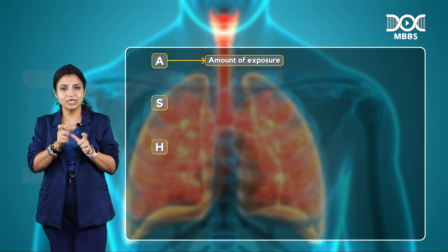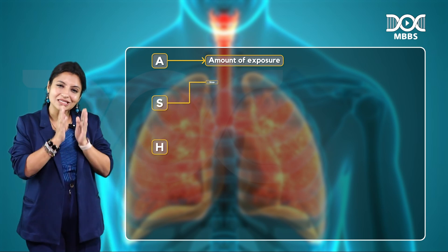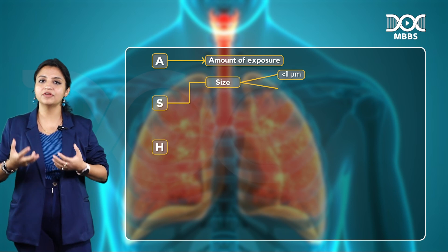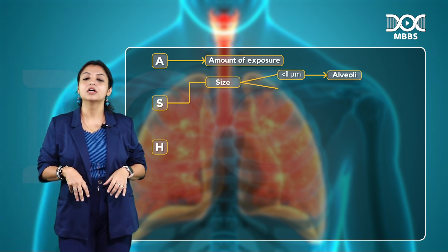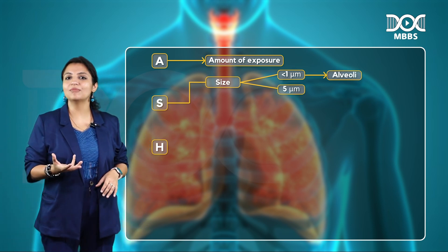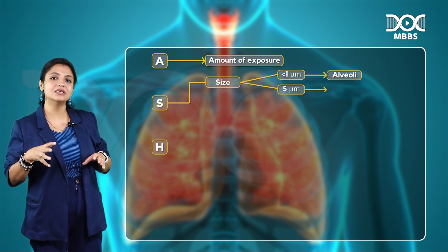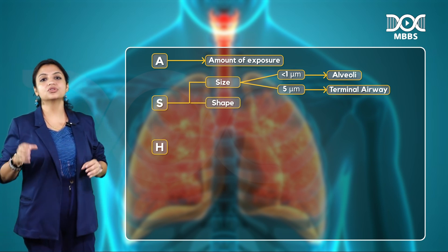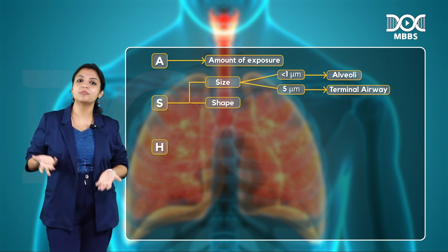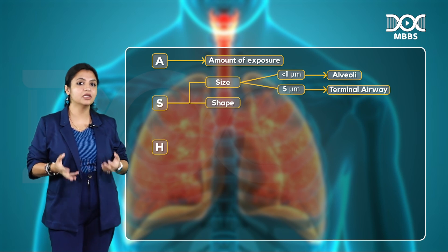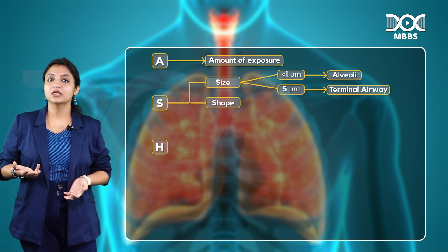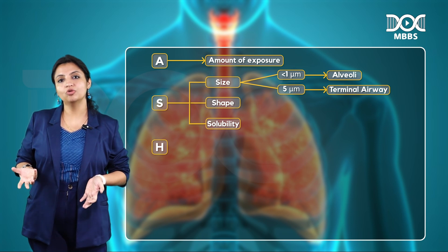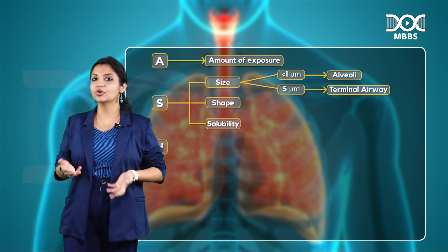S stands for size of the particle. If something is less than one micrometer in size, it will lodge in the alveoli, whereas something about five micrometers in size will lodge till the terminal airway. Next is shape — the shape of the particle defines how it enters. And finally, solubility — how much solubility does the particle have.